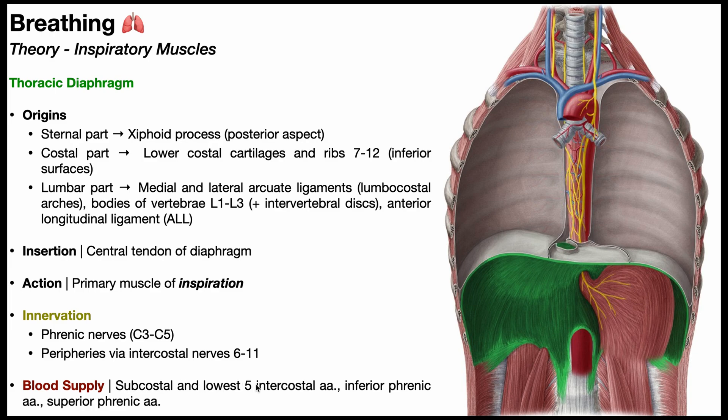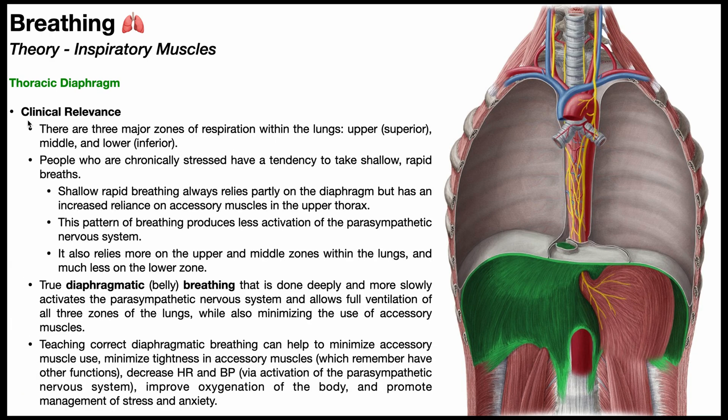Blood supply to the diaphragm is via the subcostal and the lowest five intercostal arteries, as well as the inferior phrenic arteries and the superior phrenic arteries.